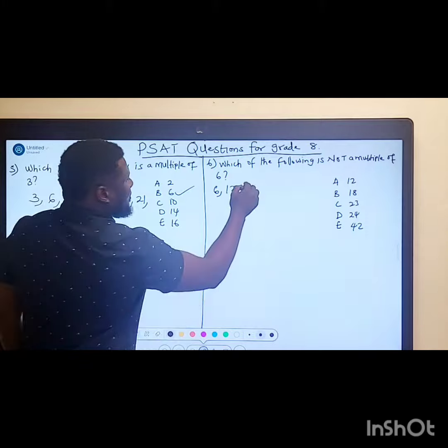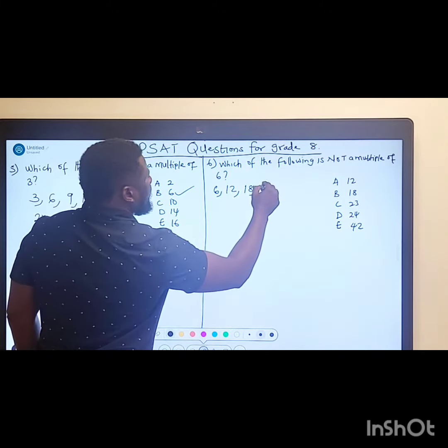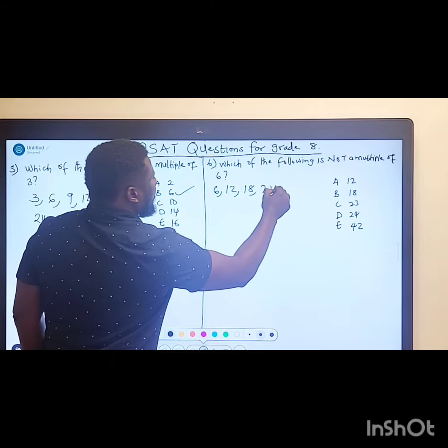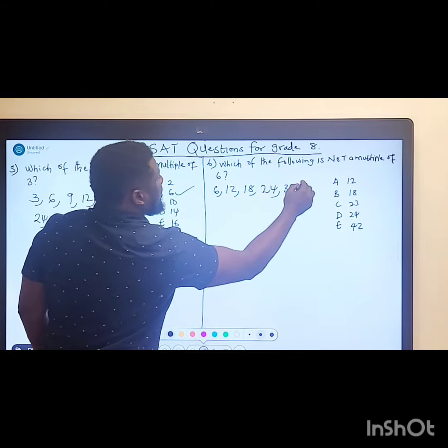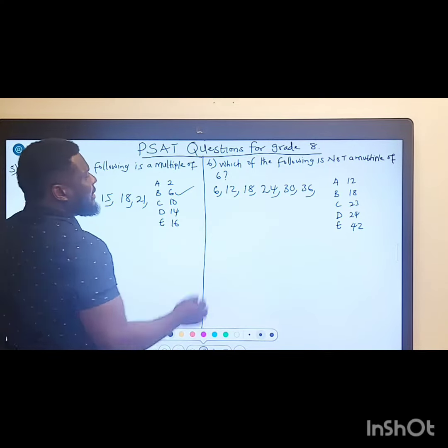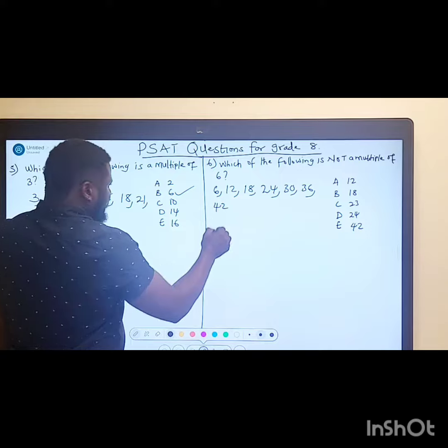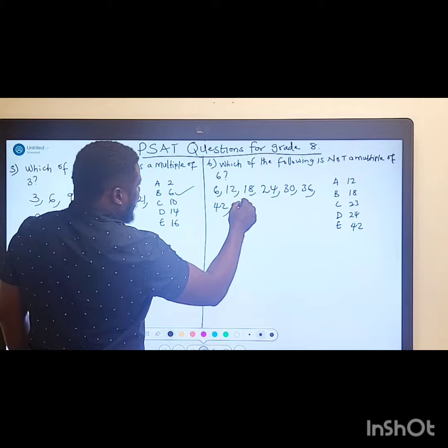Six times three will give us eighteen. Six times four will give us twenty-four. Six times five will give us thirty. If you add six to this, gives us thirty-six. So either we can add six to that, that will give us forty-two.